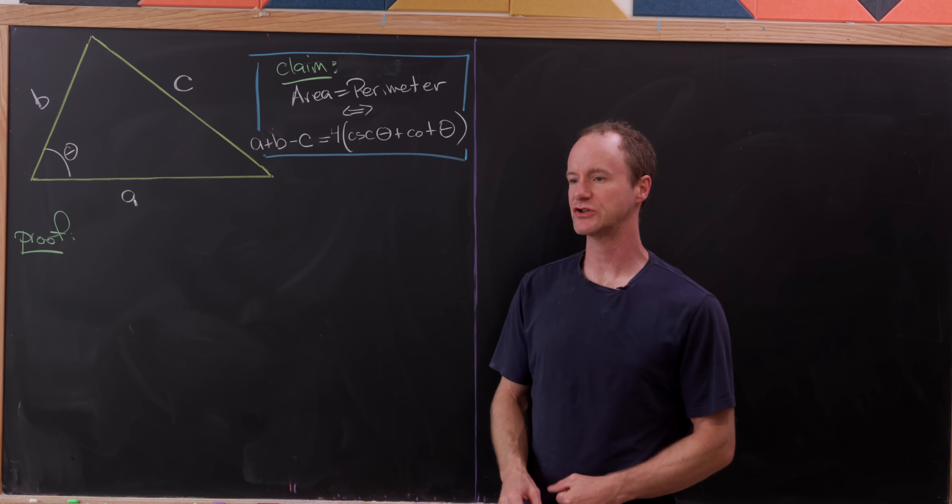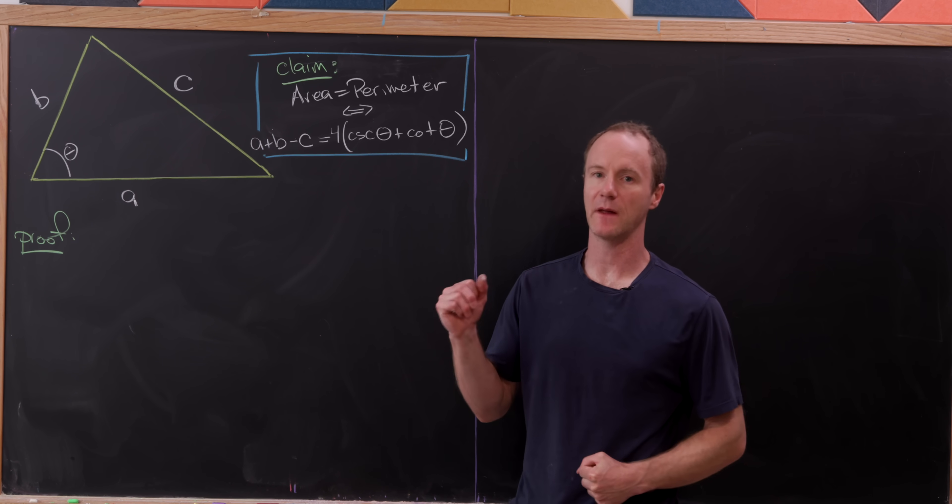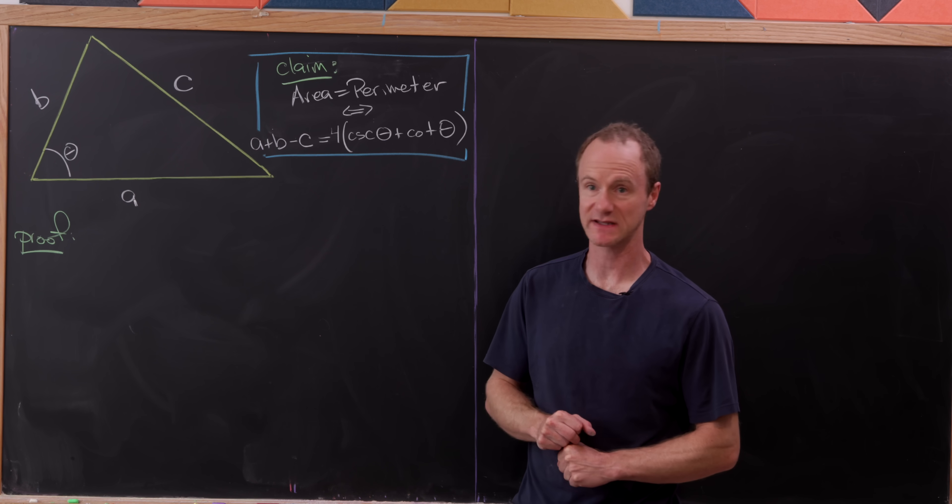Today we're going to look at a really beautiful elementary result as to when the area of a triangle and the perimeter of a triangle coincide.